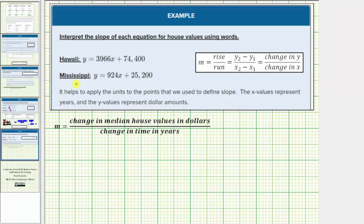So let's first interpret the slope for the equation involving Mississippi, which we know is equal to 924. To interpret the slope, we want to write it in fraction form and include units. So we'll write 924 as 924 over one. The units for 924 would be in dollars. The units for the one would be year.